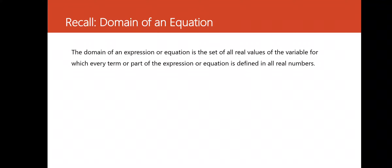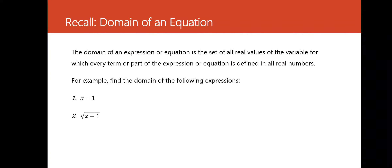Let us find the domain of the following expressions. We have x minus 1, square root of x minus 1, and tangent x plus cosine x. First, the domain of x minus 1 is the set of all real numbers, because there will be no number in our set of real numbers that will make x minus 1 undefined. So the domain is the set of all real numbers.